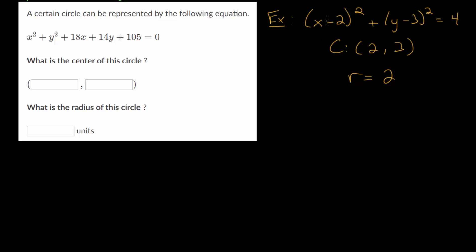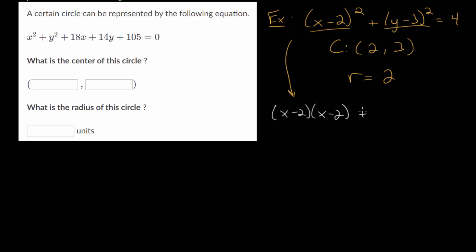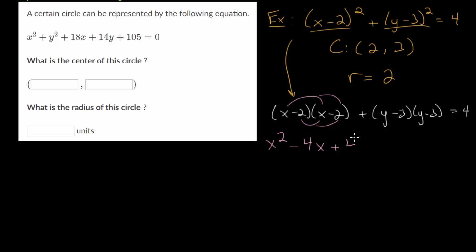Now, if we were to expand these binomials, we could transform this to the expanded equation for a circle. To expand this, we're just going to multiply the binomials out. Since x minus 2 squared is x minus 2 multiplied twice, we can rewrite it as x minus 2 times x minus 2. When we expand this, we distribute and multiply everything out. The x distributes to both terms, same with the minus 2, giving us x squared minus 2x minus 2x, which is minus 4x, plus 4.